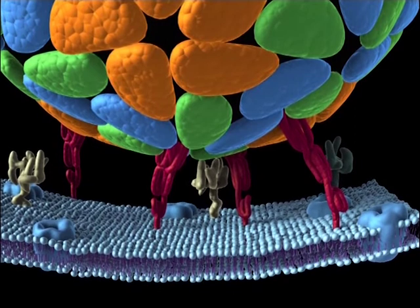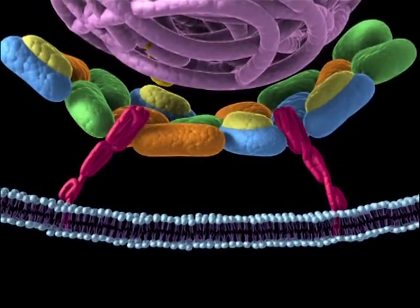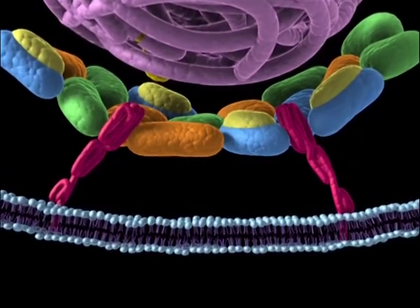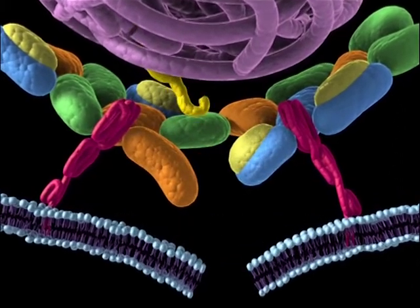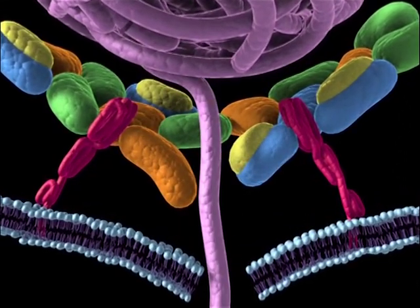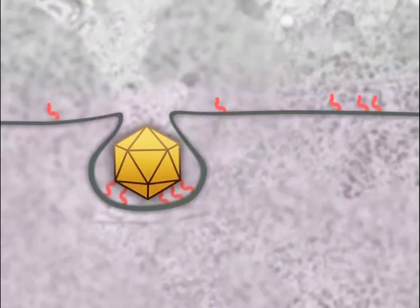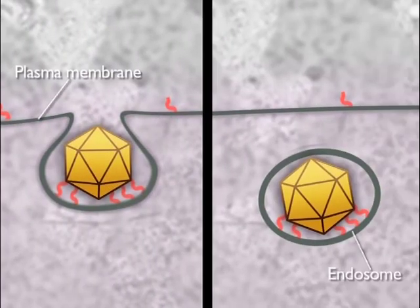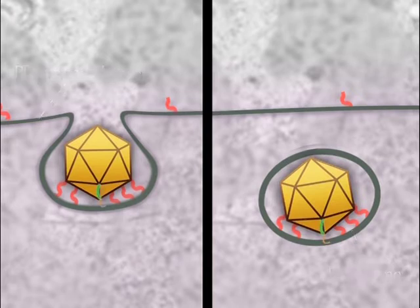As a result, a pore is formed on the capsid and the cell membrane. Through this opening, the viral RNA is transported into the cytoplasm. It is not known if uncoating takes place at the plasma membrane or within endosomes. But eventually, the poliovirus RNA is released into the cytoplasm.